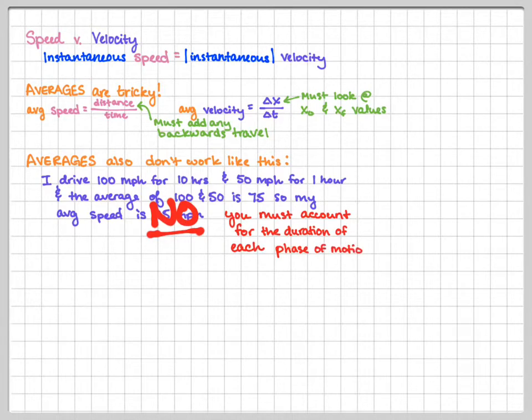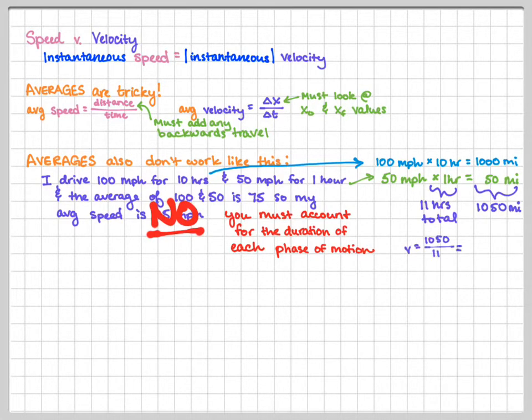I drove at 100 miles per hour for much, much longer than I drove at 50 miles per hour. I have to figure out the total time where I was traveling and I have to figure out the total distance or total displacement that I traveled. So in this scenario, I traveled for 11 hours straight and a total of 1050 miles. Take that distance, divide it by 11 hours. My average speed was 95 miles per hour. This makes sense, right? I drove at 100 miles per hour for much, much longer than I drove at 50 miles per hour. So having a number that high, it seems pretty reasonable when you think about it kind of logically.